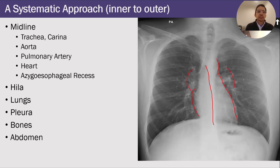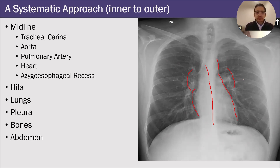And then I look at the lungs themselves. When I look at the lungs, I look at each lung individually — I zoom in with my mouse, then I zoom out and look at both lungs side to side, because they should be about the same density and size. Then I look at the pleura, looking for pneumothorax and pleural effusion, and then finally the bones and the abdomen.